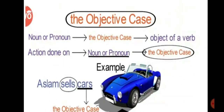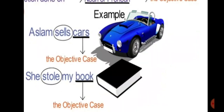Let me make you understand the objective case once more. A noun or pronoun is in the objective case when it is used as the object of a verb — meaning when an action is being done on a noun or pronoun, that noun or pronoun is in the objective case. Example: 'Aslam sells cars.' Here you can see 'cars' is in the objective case because cars are the object on which the action is being done, and that's why the noun 'cars' is in the objective case.